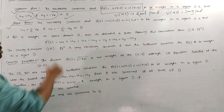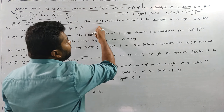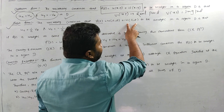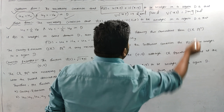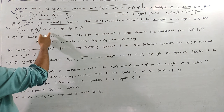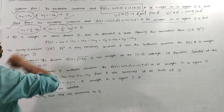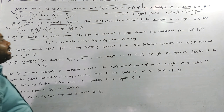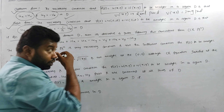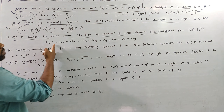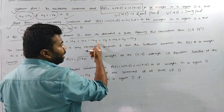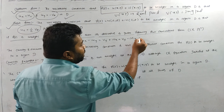Next, there is the polar form. The necessary condition: f(z) equals u(r,θ) plus i·v(r,θ) is analytic in region D if ∂u/∂r = (1/r)·∂v/∂θ and ∂v/∂r = −(1/r)·∂u/∂θ in D. If f(z) is analytic in domain D, then its derivative is f′(z) = u_x + i·v_x = u_x − i·u_y.